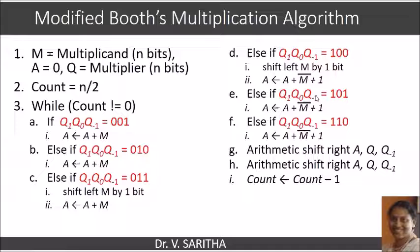If q1, q0, q-1 is equal to 101, then perform subtraction operation, that is A minus M. And if q1, q0, q-1 is equal to 110, again perform subtraction only.